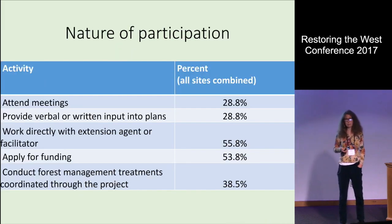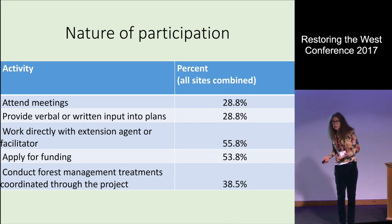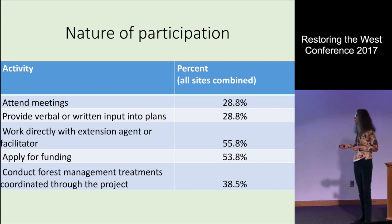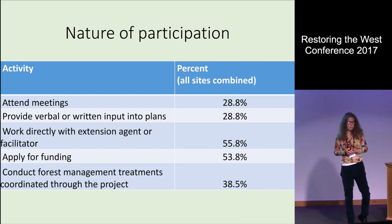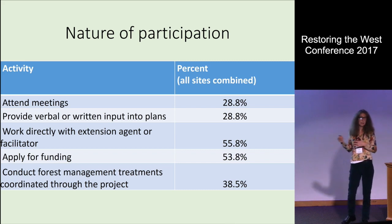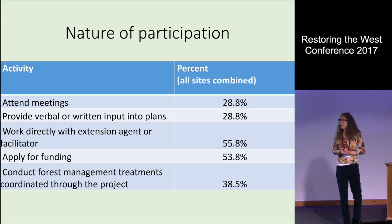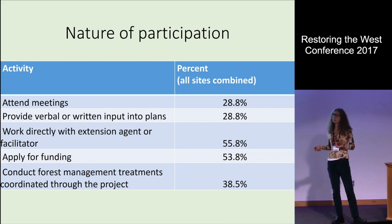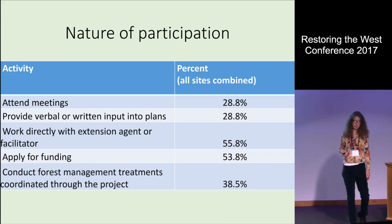When I talk about family forest owners who participated versus those who did not, participation can mean a number of things: simply attending meetings, providing input into the planning process, working directly with an extension agent, applying for NRCS funding to get work done on their property, or actually going out and implementing treatments on their lands as part of this program.